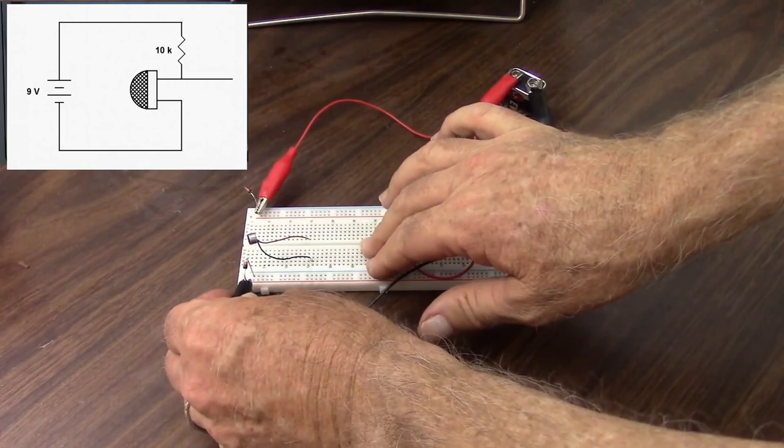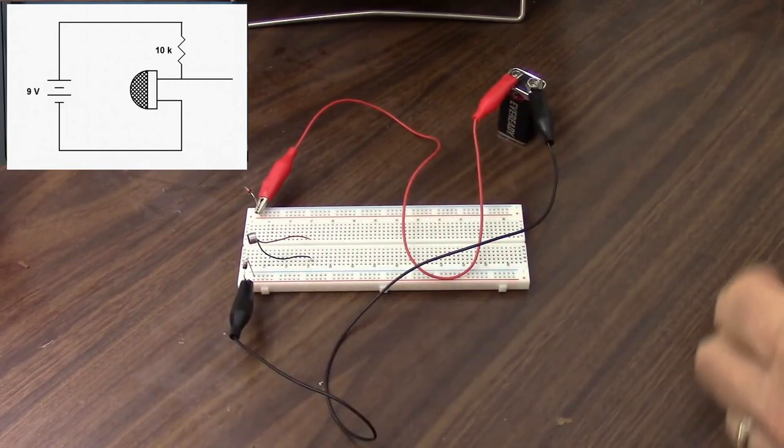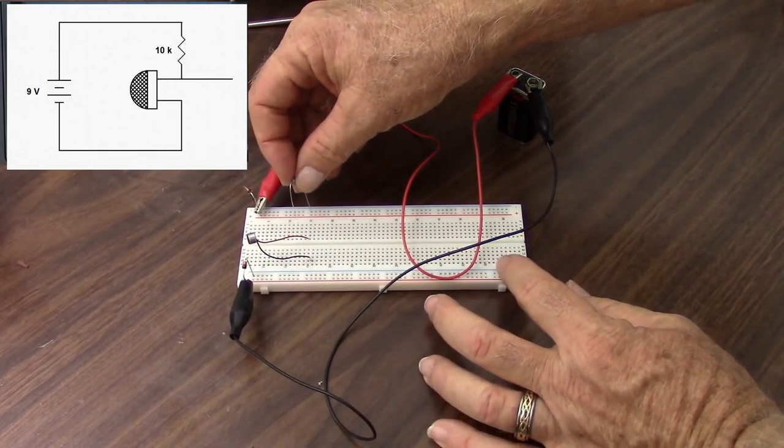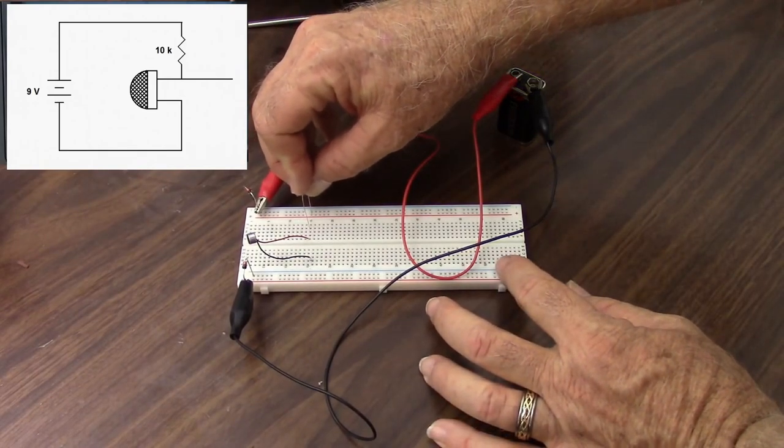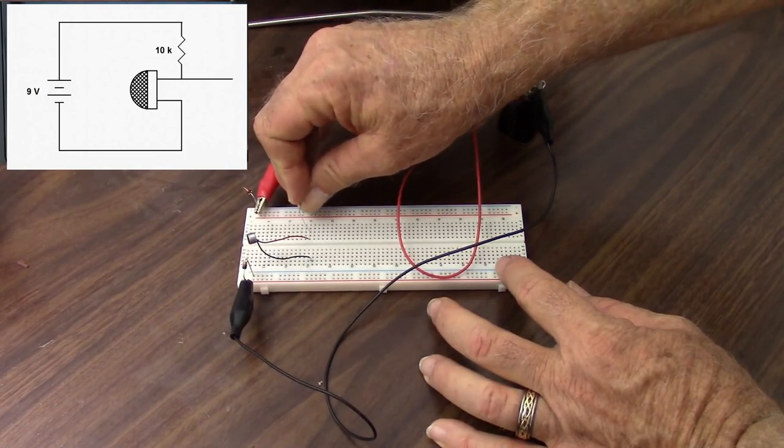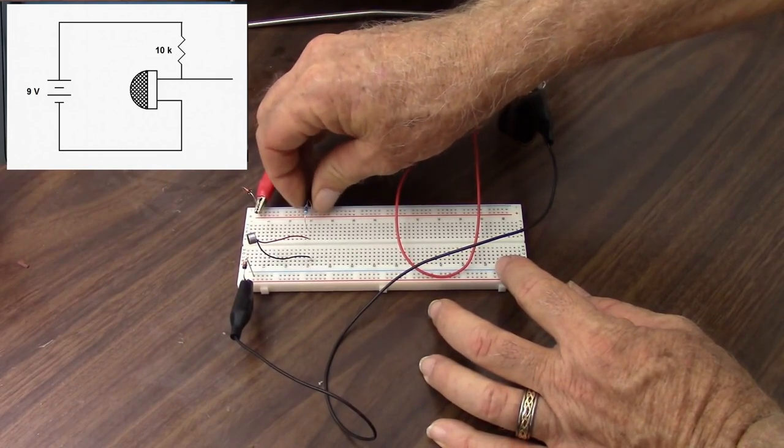Hook up the positive there and the negative there, and we need a bias resistor. I'm going to put a 10k resistor between the positive and the microphone and see how that works.